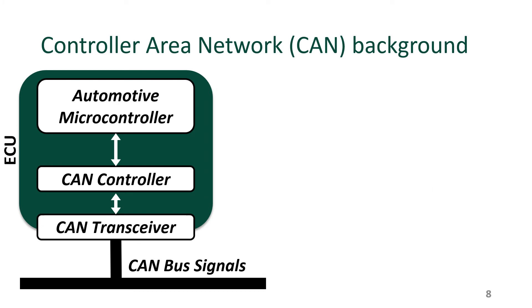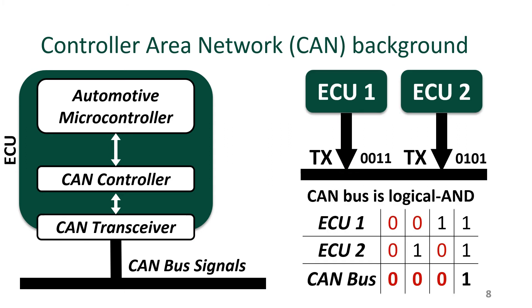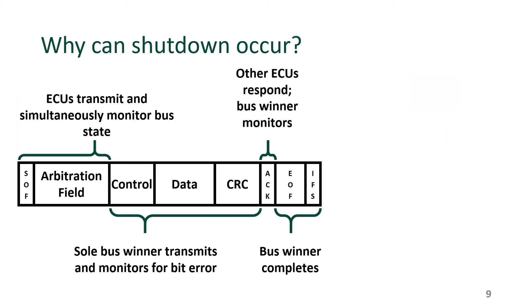When looking at the protocol stack for CAN, there are generally four different layers. First, the automotive microcontroller, or MCU, contains the ECU software. When the software wishes to communicate over CAN, it sends data to the CAN controller, which is basically a finite state machine that converts the data into CAN-specific frames. Then the CAN transceiver converts the frames into the proper bus voltage, and the frame is sent bit by bit onto the CAN bus. Multiple ECUs communicate on this network, so the bus's design is a logical AND — if at least one ECU writes a zero bit, then the value of the bus is a zero bit as well. There are a few extra protocol details that reveal how CAN is vulnerable to shutdown attacks.